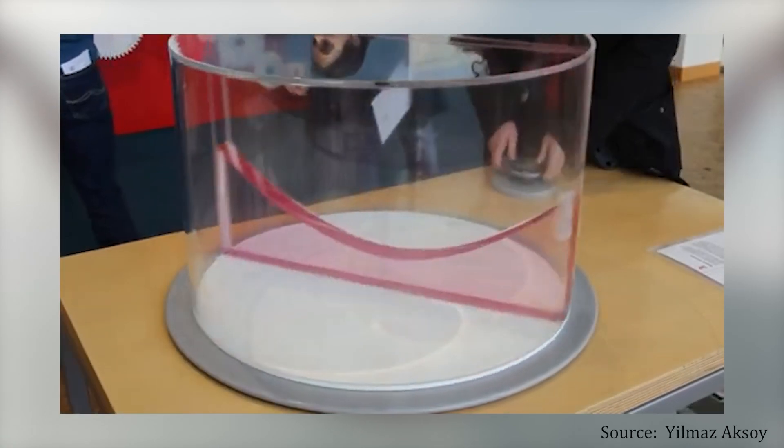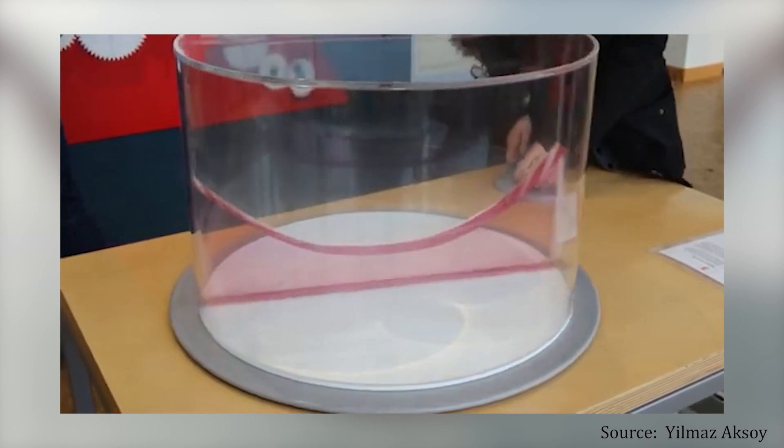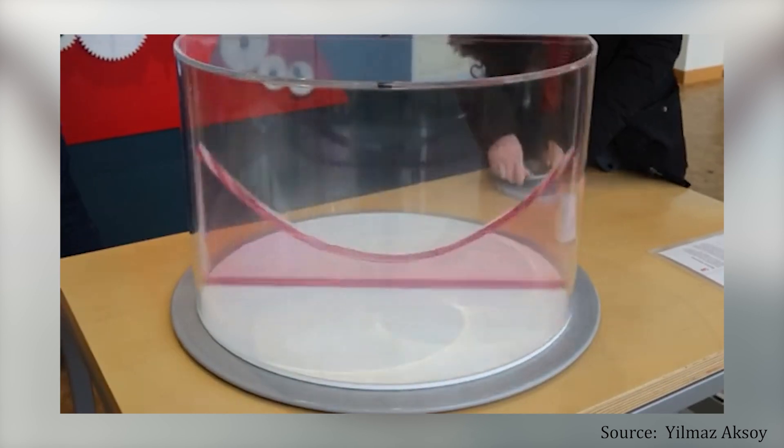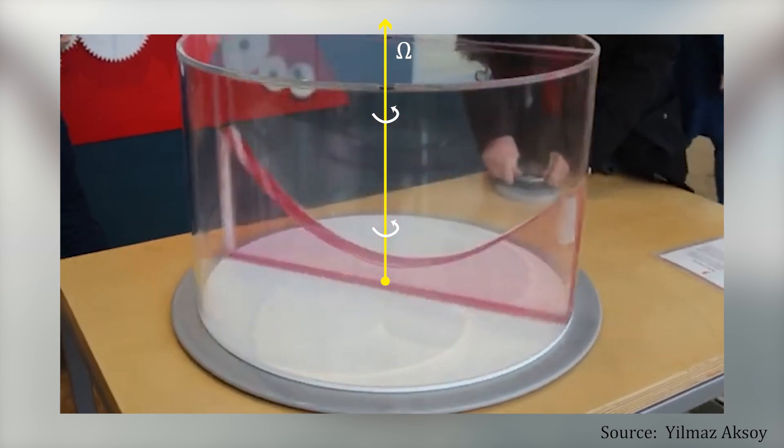What is cool about this thought experiment is that it can be replicated in real life. The experiment shown here is called Newton's bucket. It works in the same way as the cars do. The water is being rotated at a constant angular velocity and so wants to be centrifuged out, but gravity pulls it back in, which forms a paraboloid on the surface.